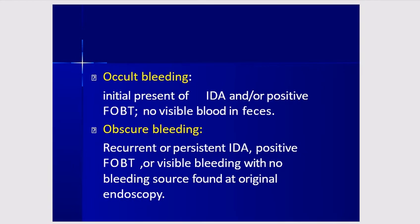Occult bleeding is the initial presence of a positive fecal occult blood test but no visible blood in the feces. Obscure bleeding is recurrent or persistent bleeding with a positive fecal occult blood test or visible bleeding but no bleeding source found at original endoscopy.